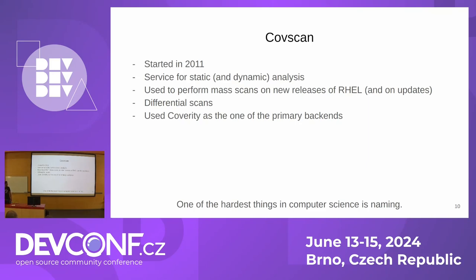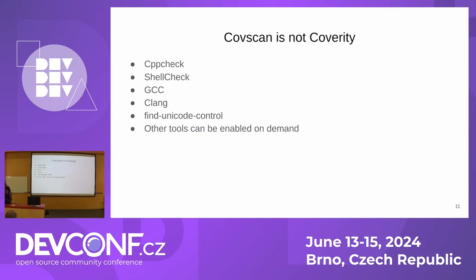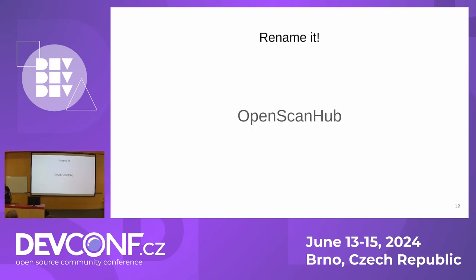One of the hardest things in computer science is naming. CoScan was not Coverity, but other than Coverity, we were also using open source tools like CppCheck, ShellCheck, GCC, and Clang — static analyzers embedded in GCC and Clang — plus FindBugs Unicode control. We spent more than a decade trying to tell people that CoScan is not Coverity, but just because of the name, people always confused them. So we decided to rename the project to OpenScanHub.